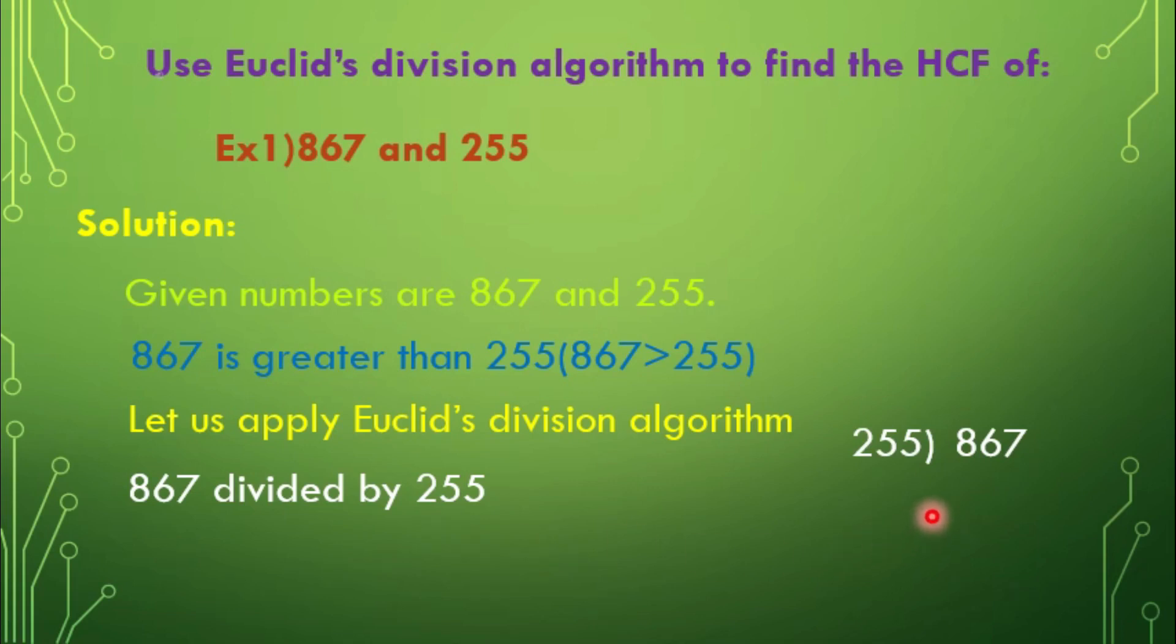255 multiplied by 3 is 765. And here, 867 minus 765 gives you 102. So, remainder 102.